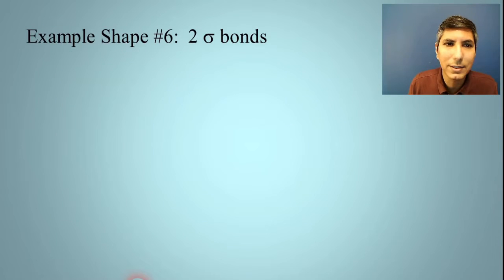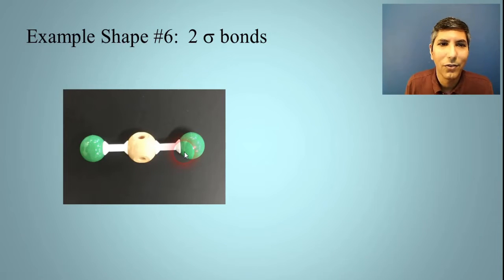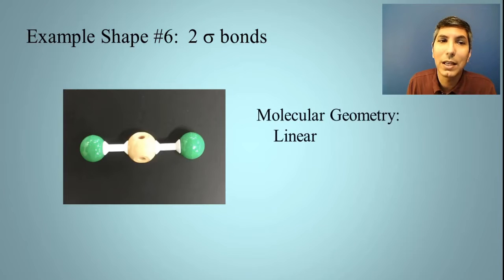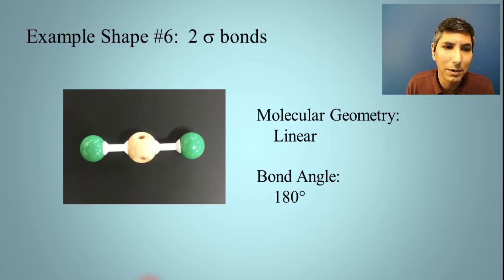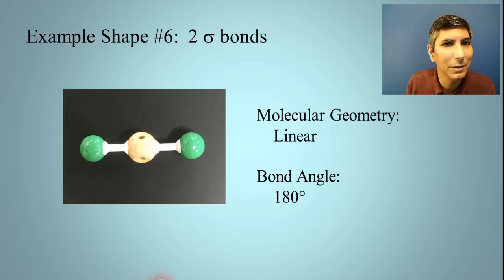Let's try another structure: just two sigma bonds and no unshared pairs. You can probably figure out the bond angle just by looking at it — that's 180 degrees, and it's called linear. It basically looks like a straight line. So linear geometry, 180-degree bond angle. These shapes are easy to identify once you're working through examples.